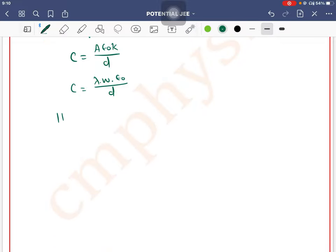So the initial energy will come. What is the initial energy? Half C V square. So this will be half lambda W epsilon not by D V square. This is the initial energy.